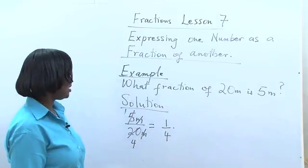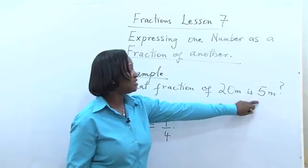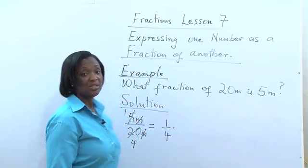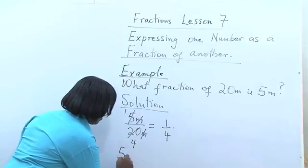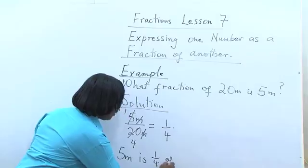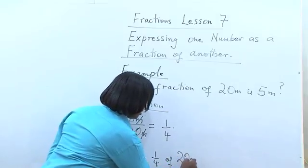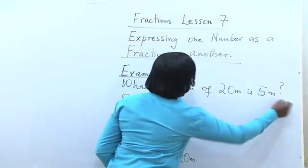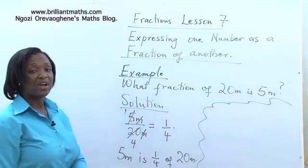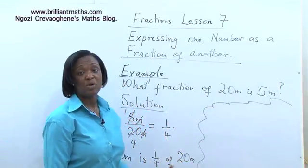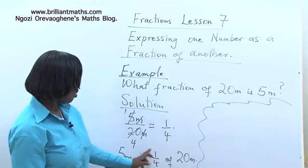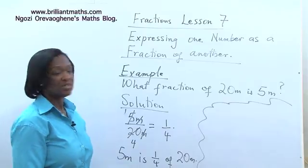This goes to say that 5 meters is 1 quarter of 20 meters. Let's check if this is correct. Remember, I always advise you to check your answers when you work them out. Let's check if 1 quarter of 20 is 5 meters.